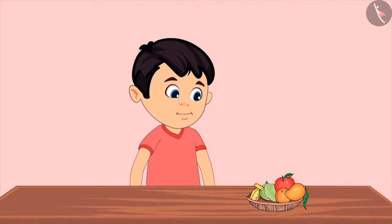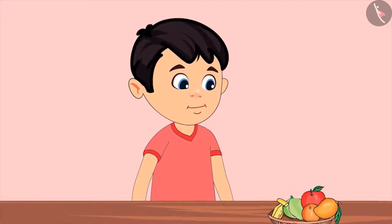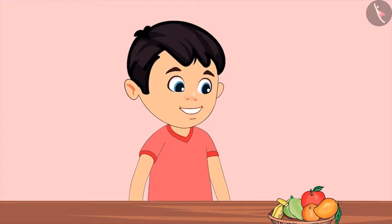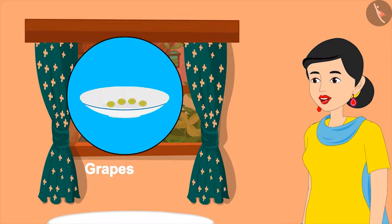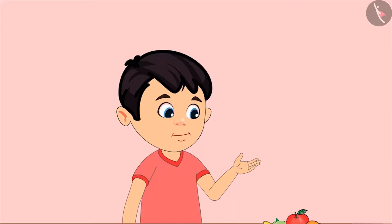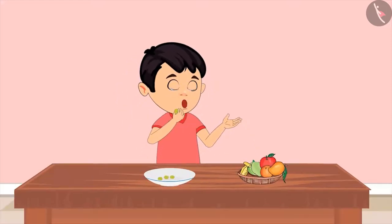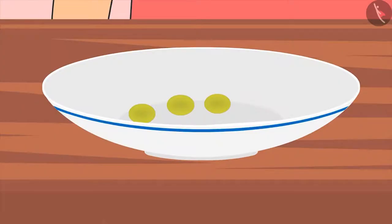Now Chotu has started eating fruits instead of sweets. Let's see which fruit he wants to eat today. Chotu says: 'Mom, please give me some grapes to eat.' Pinky had eaten grapes and there are only four left. 'Have these, I will bring more later.' Chotu replies: 'Okay, I have eaten one out of four grapes — now tell me, how many grapes are left?'